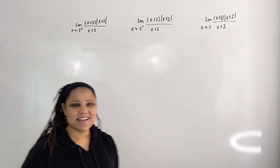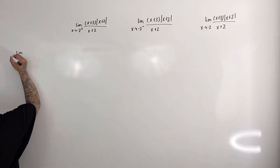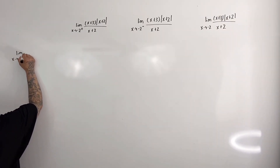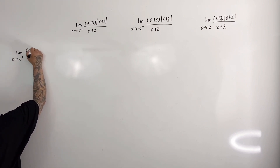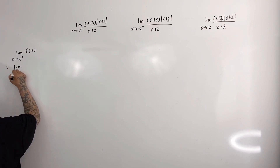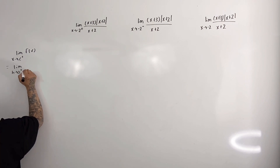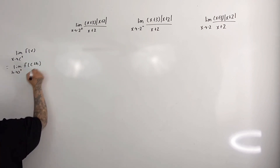Keep in mind the following. The limit as x approaches c from the right of f(x) is equal to the limit as h approaches 0 from the right of f(c plus h).